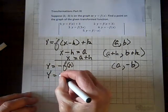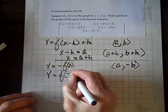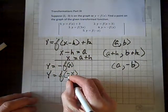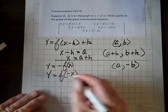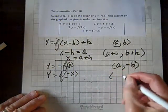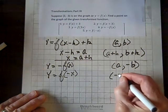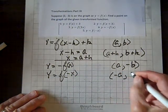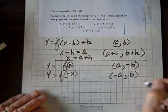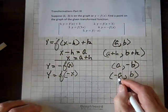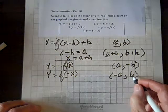What if we have y equals f of negative x? Well, this sign now impacts the x coordinate, and you multiply the horizontal coordinate by a negative. In other words, you change the sign on it, and you get the ordered pair negative a and b.